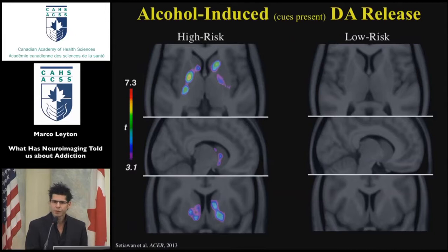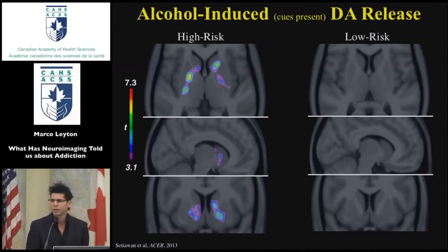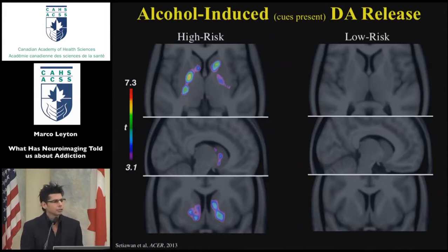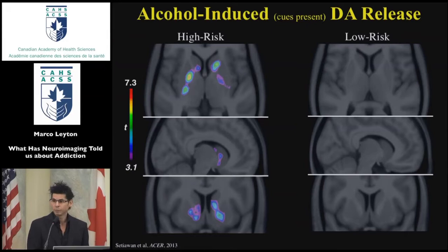To push this further, we recruited individuals genuinely at risk for addictions — particularly alcohol use disorders. We gave them a big drink of actual alcohol, so the usual cues were present: it looked, smelled, and tasted like alcohol. The high-risk individuals showed a robust dopamine response within the striatum, particularly within the ventral limbic region. The response in the low-risk individuals was so small it was subthreshold — we couldn't even detect the dopamine response in them.